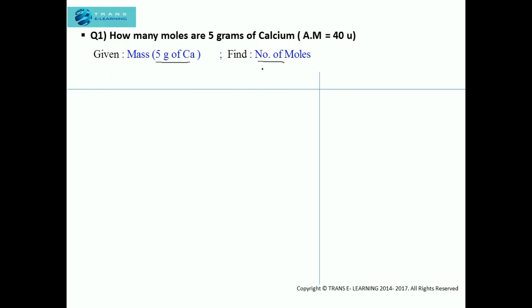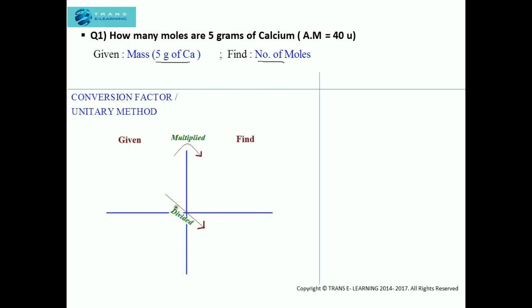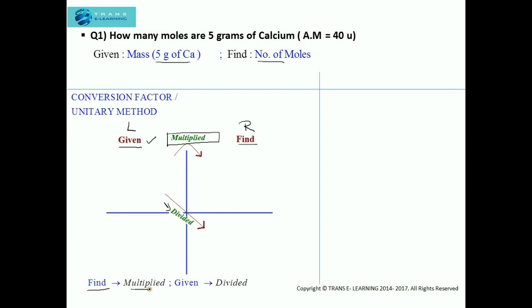First, I will teach you the conversion factor method. In this method, what is given is written on the left-hand side and what we need to find is written on the right-hand side. We multiply the given value with some conversion factor to get the answer, and we divide the given value by the unit we want to cancel out. The key point is: what we need to find always gets multiplied and what is given always gets divided or cancelled.